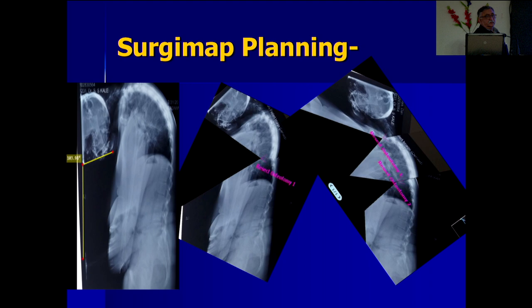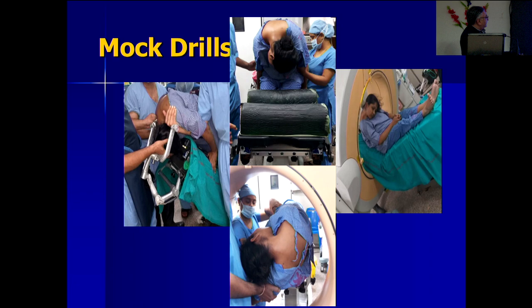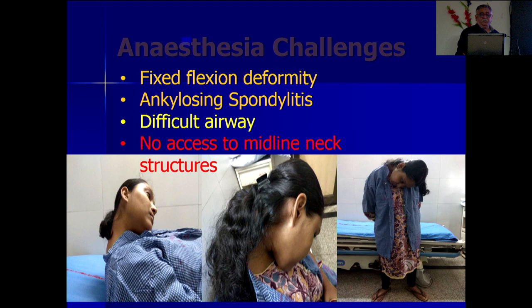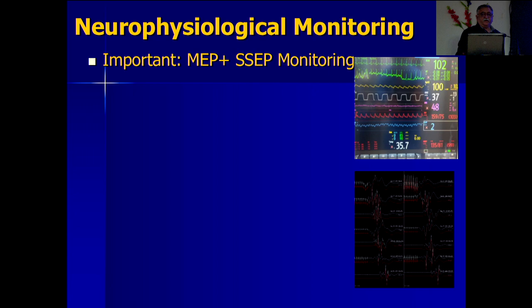We tried to get her into the theater and see what position we were going to operate in and whether we could use the O-arm or not. But her deformity was such that it was impossible to use the O-arm, so we had to proceed with pre-fed images.